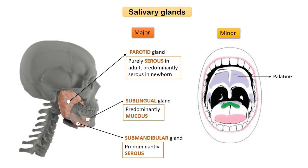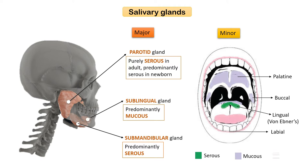The minor salivary glands are located in the submucosa of different parts of the oral cavity, including the lingual salivary glands termed Von Ebner's glands, and labial, buccal, and palatine glands. Among the minor salivary glands, Von Ebner's glands are the only ones which are serous. The palatine and buccal glands are mucus-producing, whereas the labial glands produce mixed secretions. The parotid, submandibular, and sublingual glands contribute to 90% of total saliva secretions, while minor salivary glands contribute the remaining 10%.